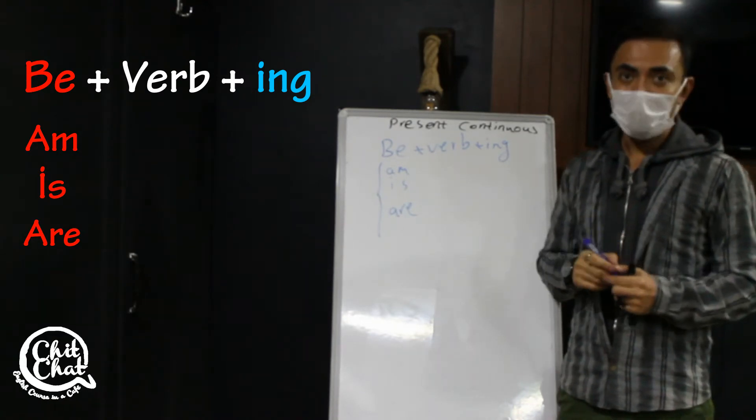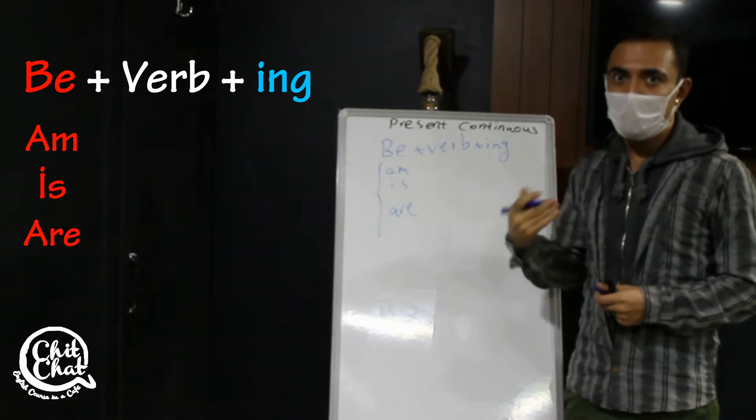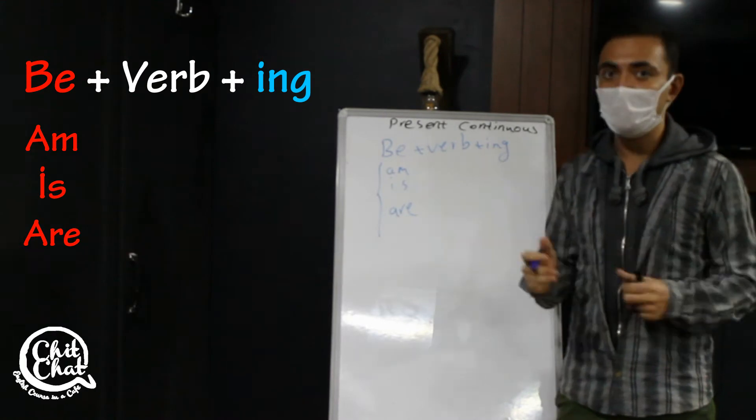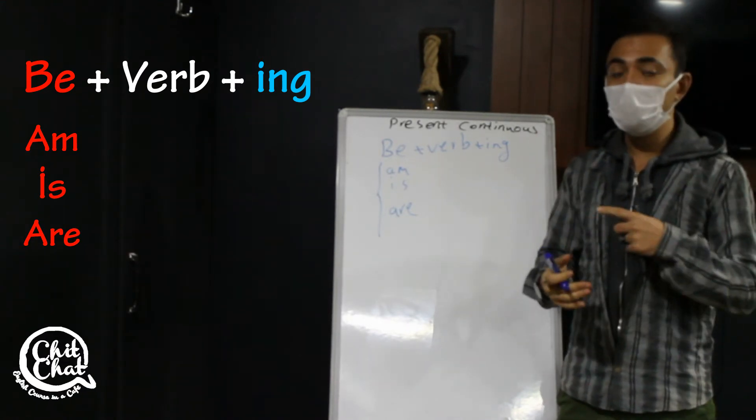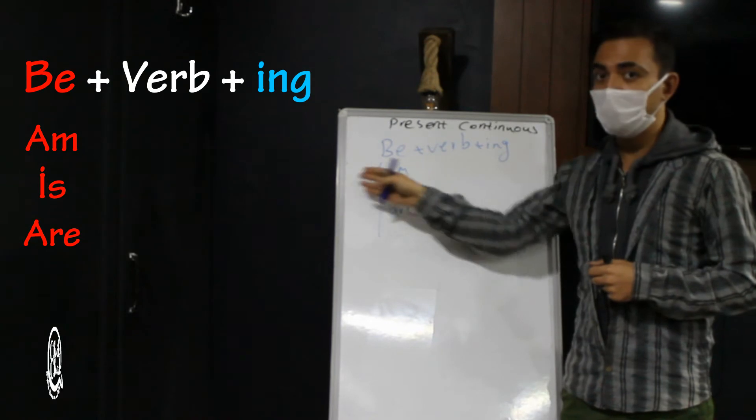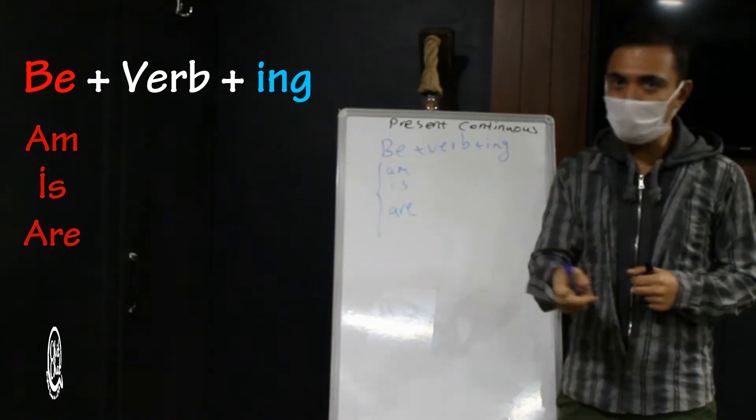For example, I am writing now. Negative form: I am not writing now. And for changing into question form, we change the to be place with the subject. Are you writing now?